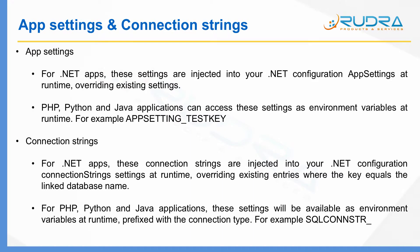The next important settings are app settings. App settings are basically key-value pairs. Generally, in a traditional .NET web application, you specify these app settings in the web.config file. Instead of providing them there, you can provide them within the Azure portal itself against that particular app. During runtime, just like the way you access app settings from your web.config file, you can access app setting values from your application. In case your web.config file contains the same key-value pair as mentioned in the app setting configuration within the Azure portal, then what you mentioned within the Azure portal will be taken as priority — it will override whatever settings you have in web.config file.